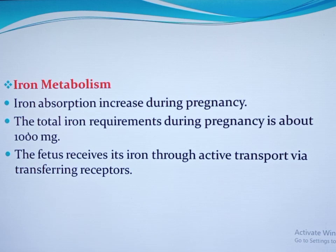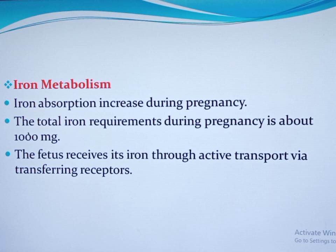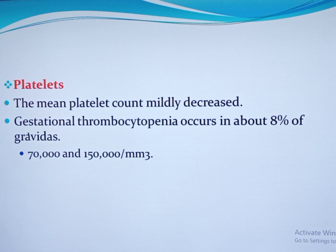Regarding iron metabolism, iron absorption is increased during pregnancy because of increased iron requirement. Around 10 percent of ingested iron is absorbed from the duodenum. The total iron requirement during pregnancy is about 1000 mg: 500 mg is needed to expand the maternal RBC, 300 mg is transferred to the fetus, and 200 mg is reserved for the daily losses of the mother. The fetus receives iron through active transport via transferrin receptors.